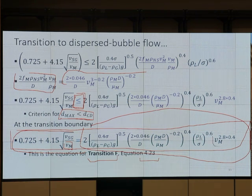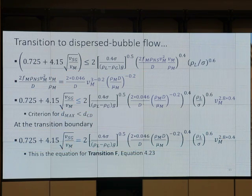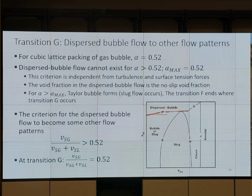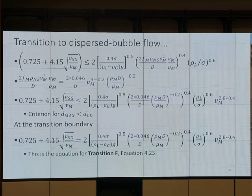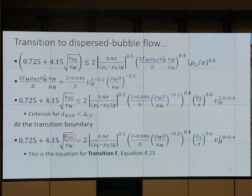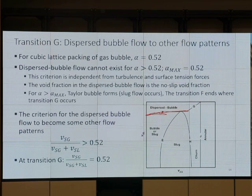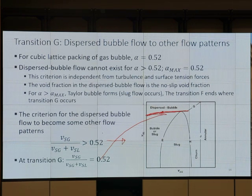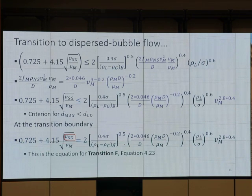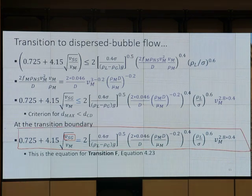You have the M over here and also M over there. This equation will give me this line. But I know that if I increase V_sg a little bit, it will make d_max be more than d_cd, and it won't be spherical anymore — so it will be slug flow. When V_sg goes up a little bit, on the log scale or linear scale, you move from dispersed bubble flow to slug flow.